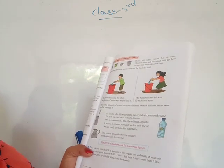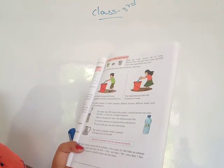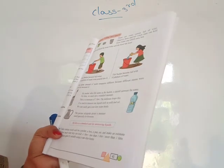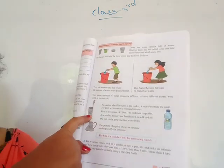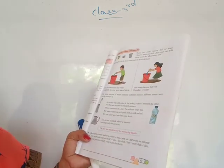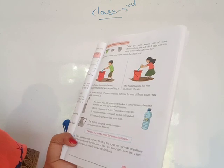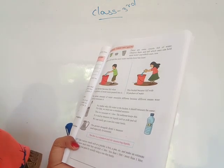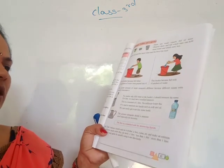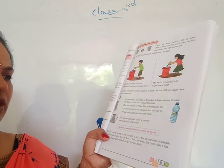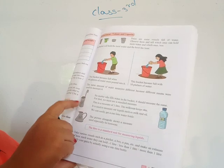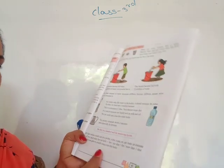No matter who fills water in the bucket, it should measure the same. For that we must use a standard measure. This standard unit is the liter. The milkman keeps this one-liter measurement. It is used to measure liquids such as milk and oil. We can easily get a one-liter water bottle.